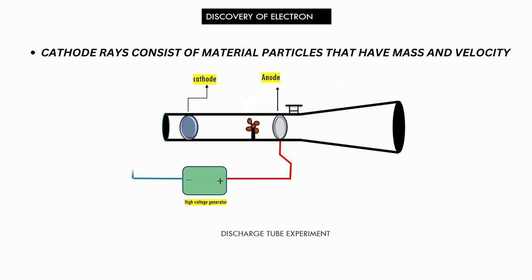When a small pinwheel is placed in the ray's path, the blades of the wheel are set in motion. Thus, the cathode rays consist of material particles which have mass and velocity.